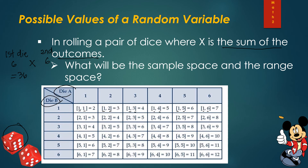For the range space, since the random variable X is the sum of the two dice outcomes, we list all unique possible sums. The smallest sum is 1+1 = 2 and the largest is 6+6 = 12, incrementing by 1. So the range space is X = {2, 3, 4, 5, 6, 7, 8, 9, 10, 11, 12}. These are the possible values of the random variable.